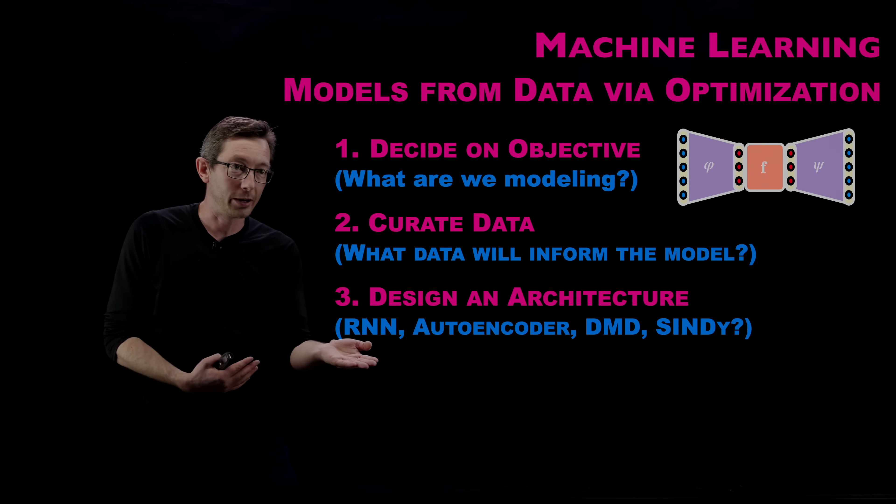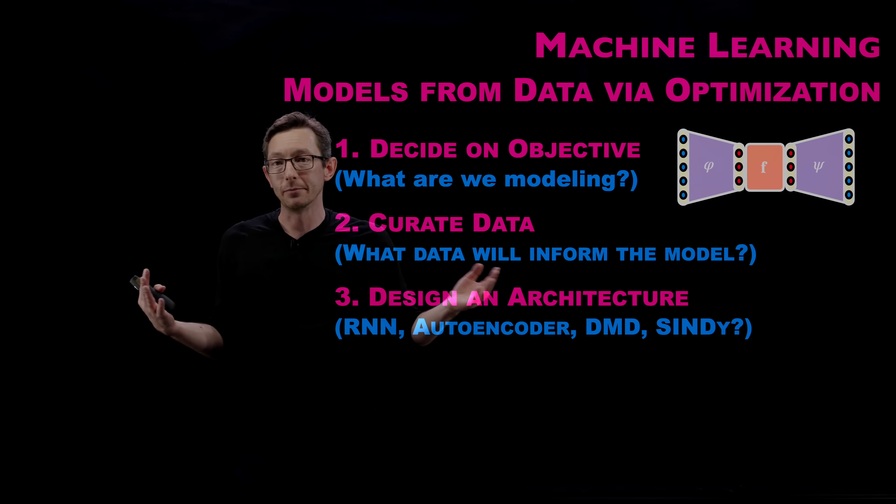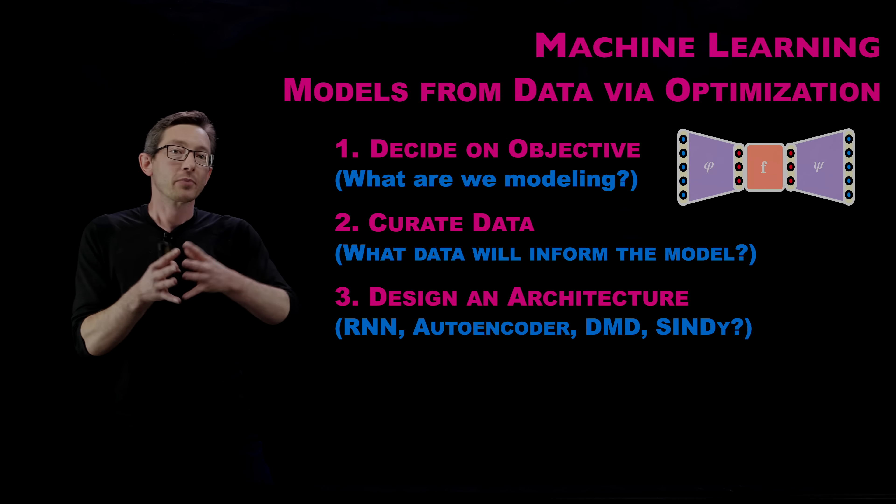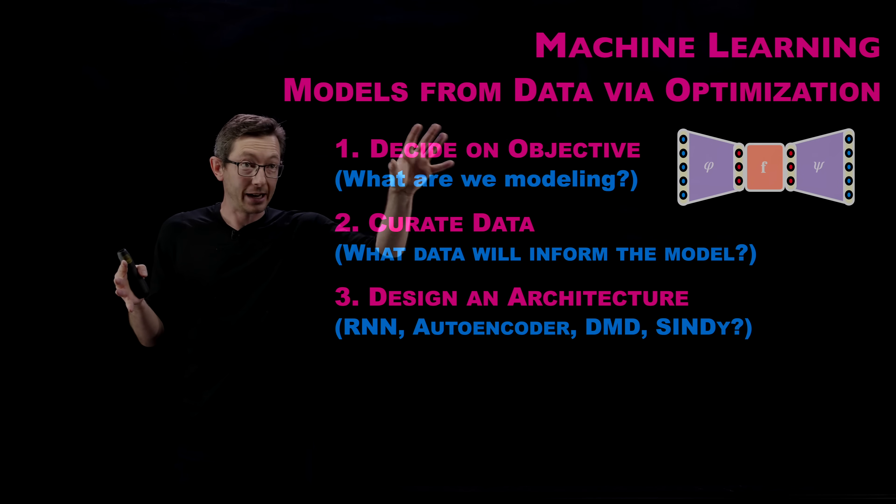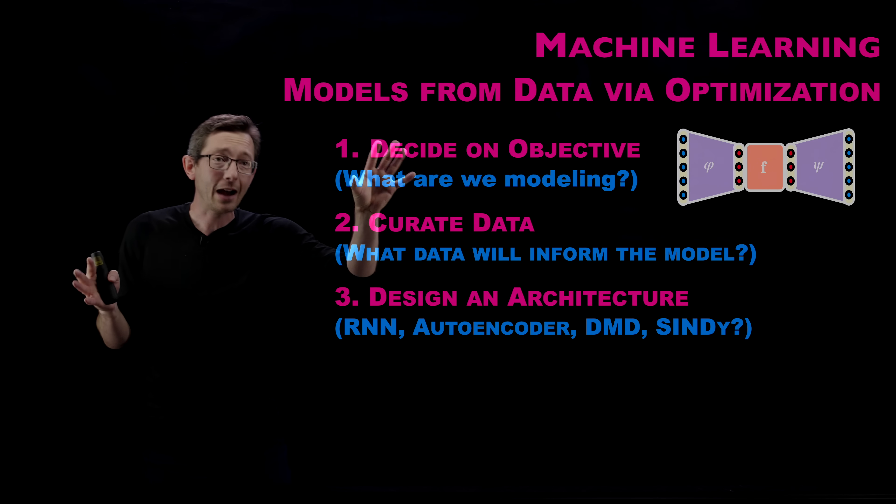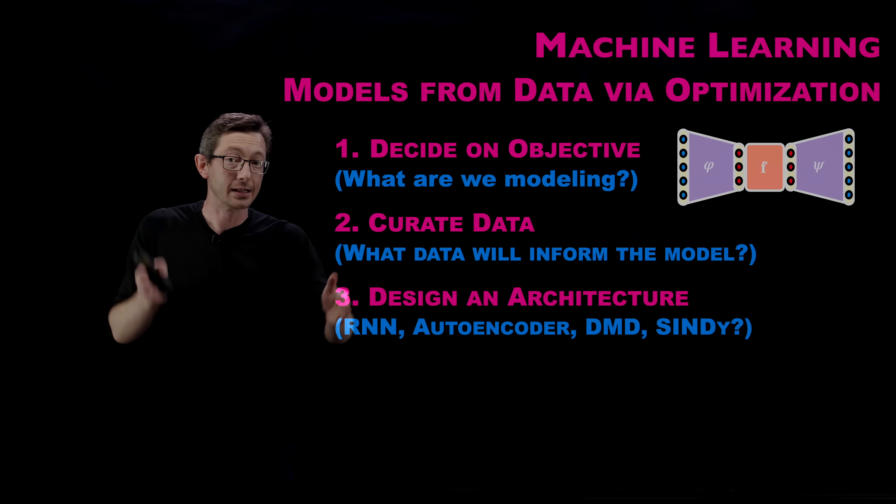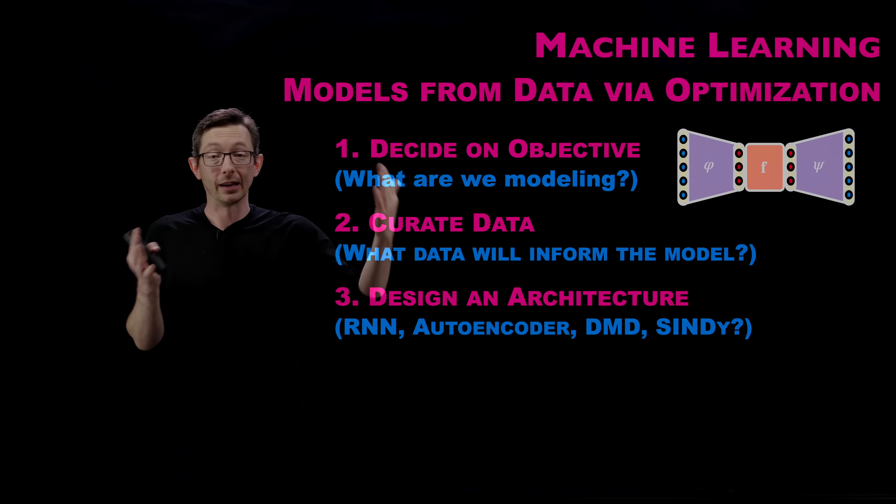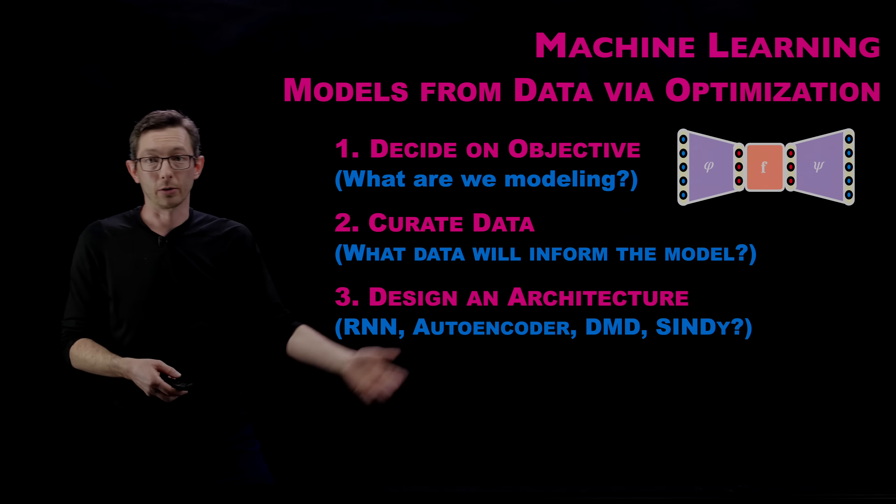Am I going to use a linear regression technique like DMD? What is the actual architecture I'm going to use to represent that input-output function? I've decided on a function. Now I'm going to decide what is the architecture that could possibly represent the input-output relationship that I'm trying to learn. Is it a recurrent neural network or an autoencoder or so on and so forth?